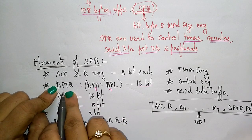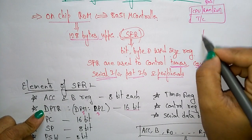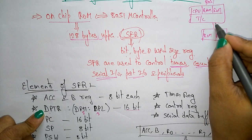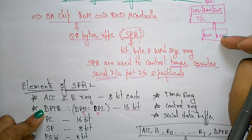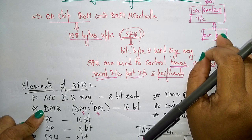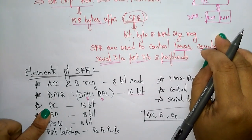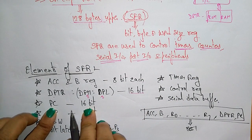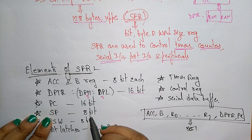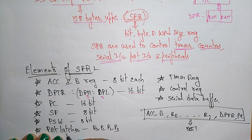The data pointer register (DPTR) is used whenever you are accessing external ROM or RAM connected to the 8051 microcontroller — that is, whenever you use external memory organization. The program counter is also a special function register of 16-bit size.